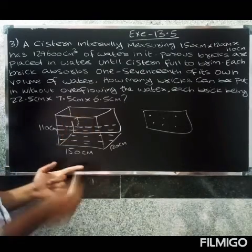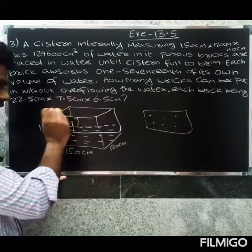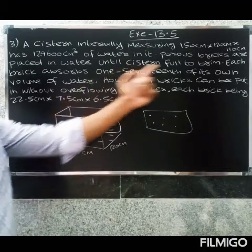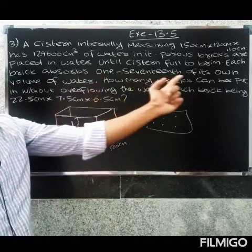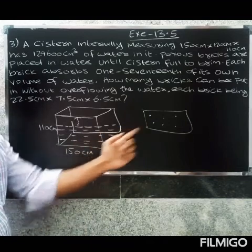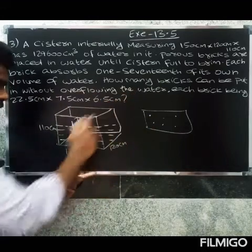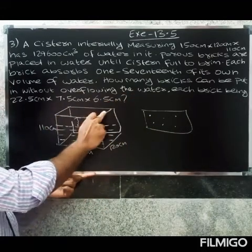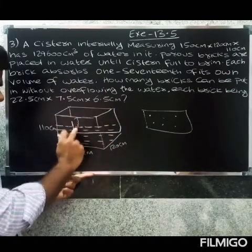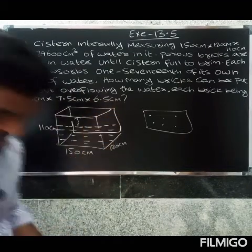Each brick absorbs one-seventeenth of its own volume of water. The water level will increase as we place the bricks. How many bricks can be put in without overflowing the water? Let's find the measurement of each brick.